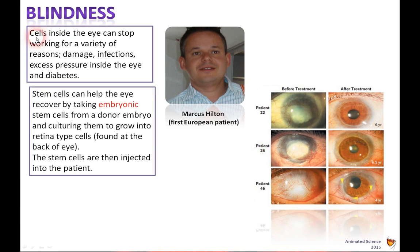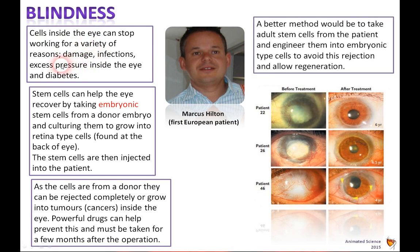Blindness: cells in the eye can stop working due to damage, infections, excess pressure, or diabetes. Stem cells can help the eye recover by taking embryonic stem cells from a donor embryo and culturing them to grow into retina-type cells found at the back of the eye. The stem cells are then injected into the patient, but as the cells are from a donor they can be rejected or grow into tumours or cancers inside the eye. Powerful drugs help prevent this and must be taken for a few months after the operation. Marcus Hilton was the first European patient to receive this treatment. A better method would be to take adult stem cells from the patient and engineer them into embryonic cells, avoiding rejection and allowing regeneration.